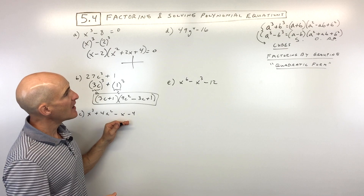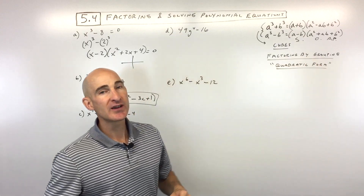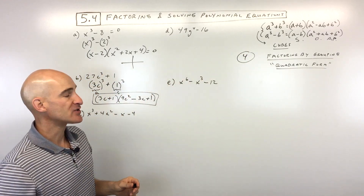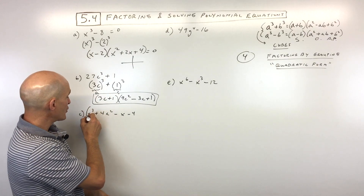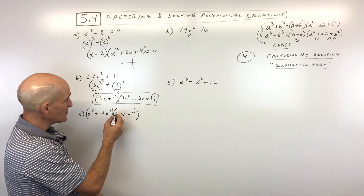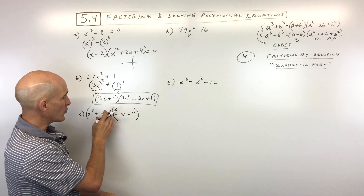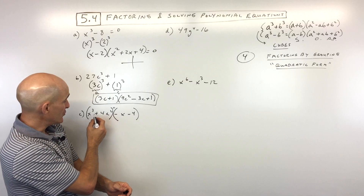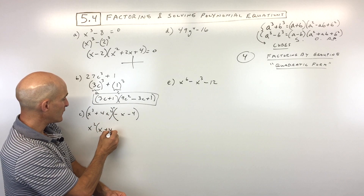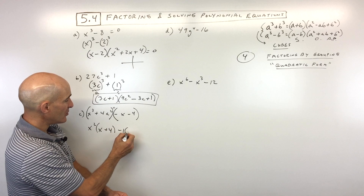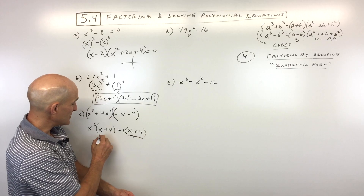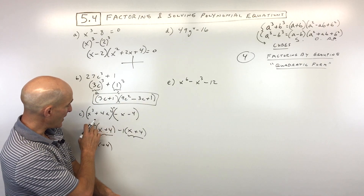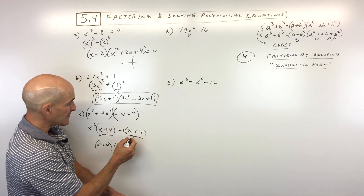Now for letter c, we're talking about factoring by grouping. You use this when you have four terms. Here we have x cubed plus 4x squared plus negative x minus 4 — four terms. Group the first two and the last two. Factor out x squared from the first group, leaving x plus 4. Factor out negative 1 from the second group, also giving x plus 4. Since both groups share x plus 4, factor it out: you get x plus 4 times x squared minus 1.